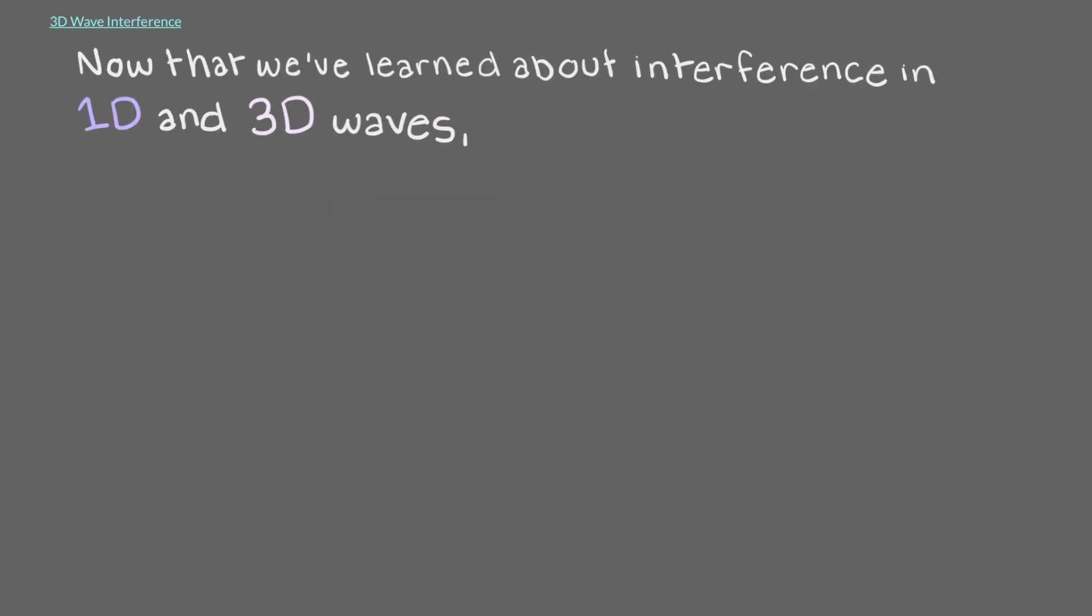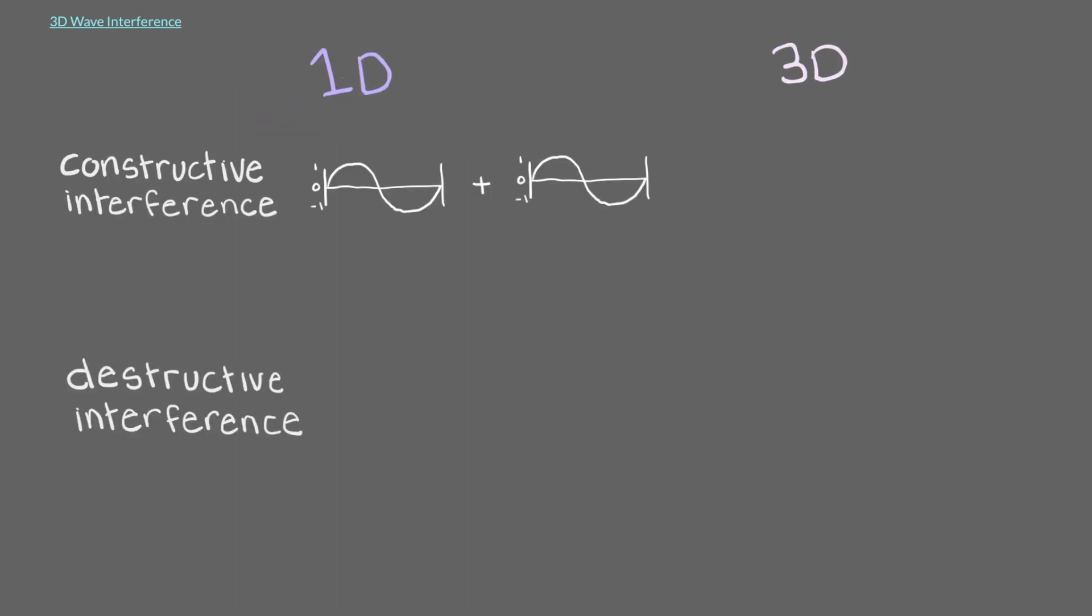Now that we've learned about interference in 1D and 3D waves, we can see how they are similar. When two in-phase 1D waves come together, they form a wave larger in amplitude, while when two in-phase 3D waves come together, they form a sphere that is larger in size.